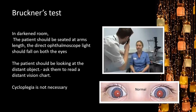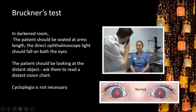For screening refractive errors, Bruckner's test is one of the easiest. Make the room dark, seat the patient at arm's length (or in mother's lap if very small), use a direct ophthalmoscope with maximum light, and have the patient fixate a distant object. Cycloplegia is not necessary for this screening test. Normal result: a red reflex that is symmetrical in both eyes, with similar intensity and color.